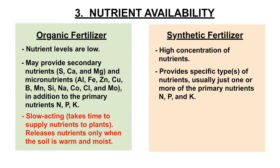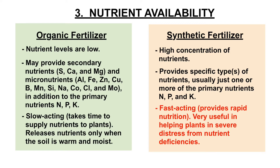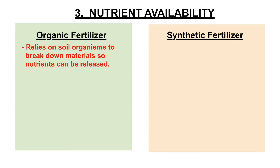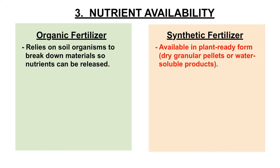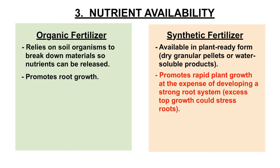Organic fertilizers are slow-acting and take time to supply nutrients to plants. They only release nutrients under favorable conditions, such as when the soil is warm and moist. Synthetic fertilizers, on the other hand, are fast-acting and provide rapid nutrition. They are very useful in helping plants that are in severe distress due to nutrient deficiencies. Organic fertilizers also rely on soil organisms to break down materials so nutrients can be released, and they promote root growth necessary for absorbing slow-release nutrients. While synthetic fertilizers promote rapid plant growth at the expense of developing a strong root system, excess top growth could stress roots, which would have to work hard to sustain the overgrown plant.